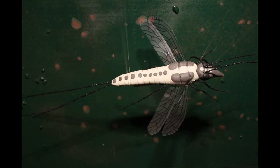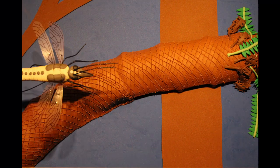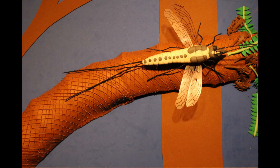Paleo-dictiopterans flew throughout the forest, piercing plants with their beak-like mouthparts to drink their sap.